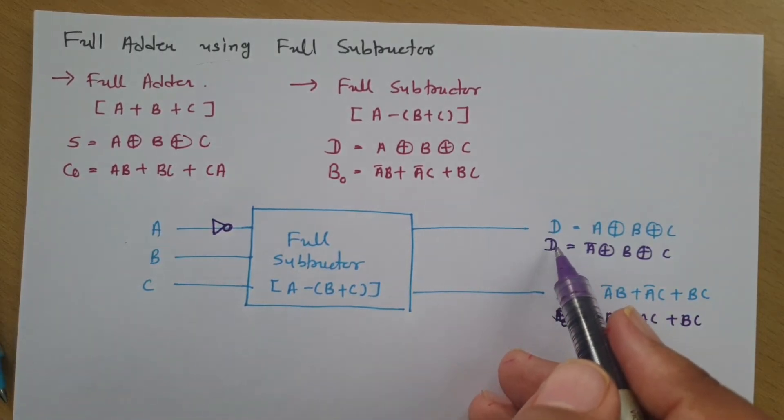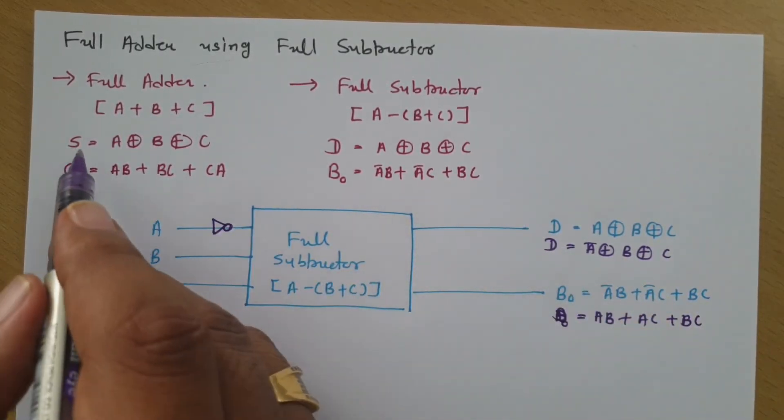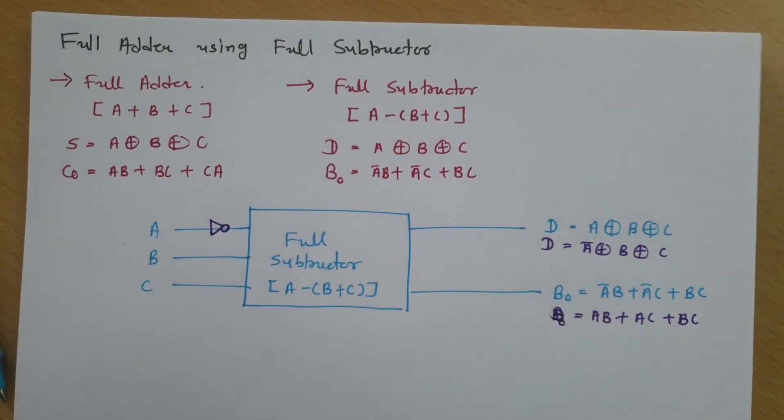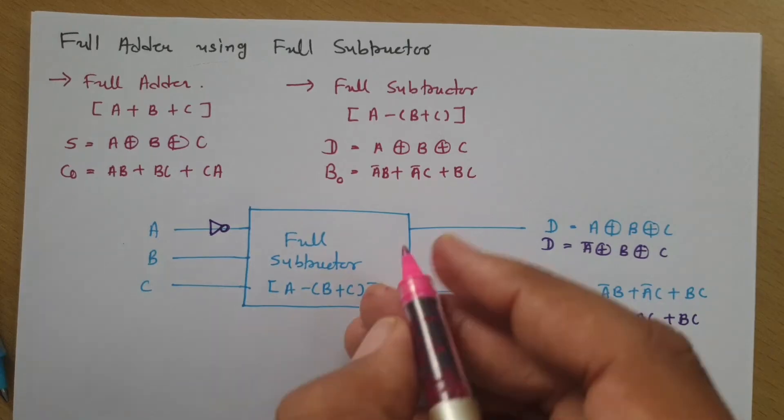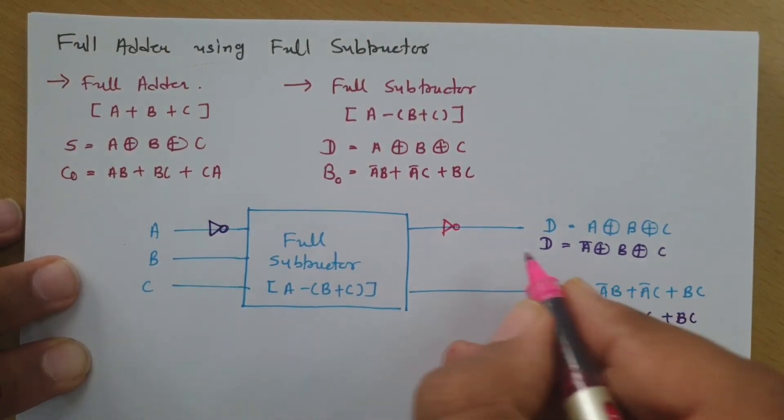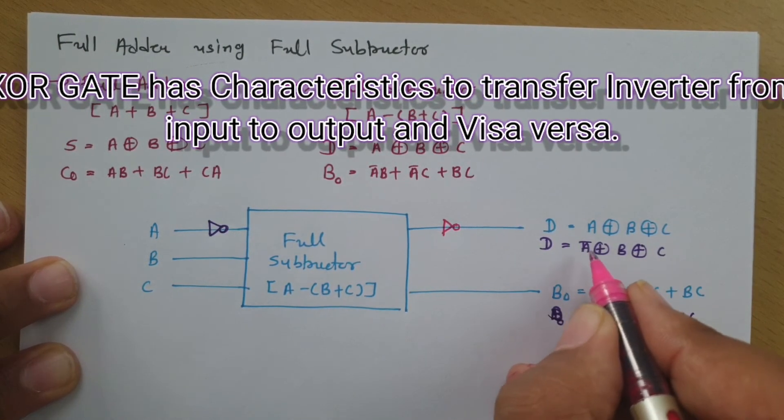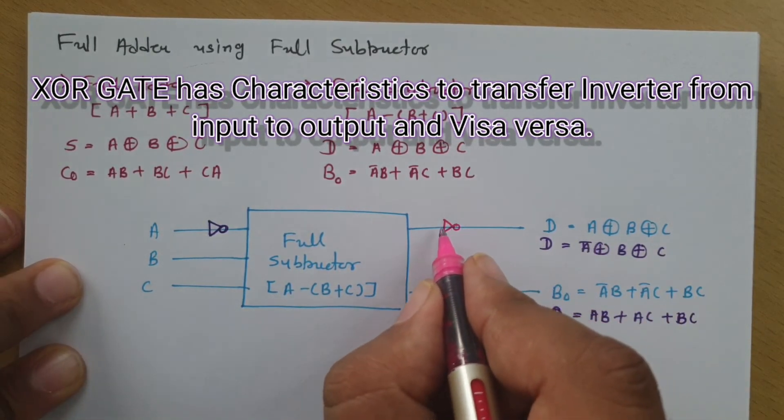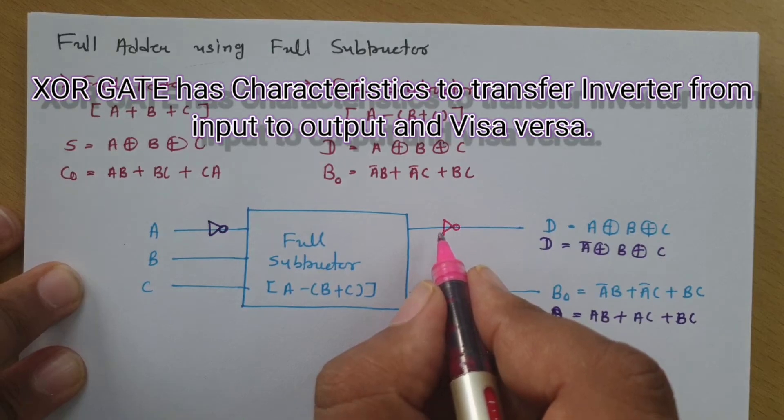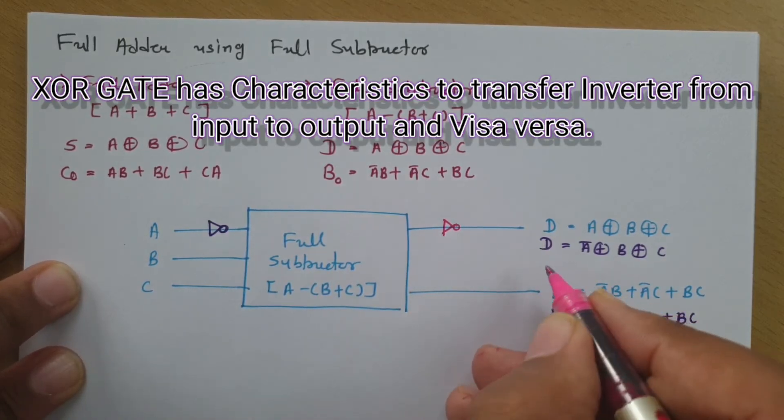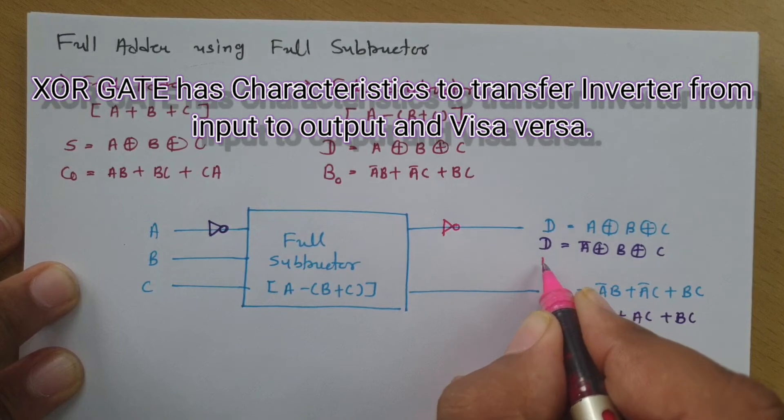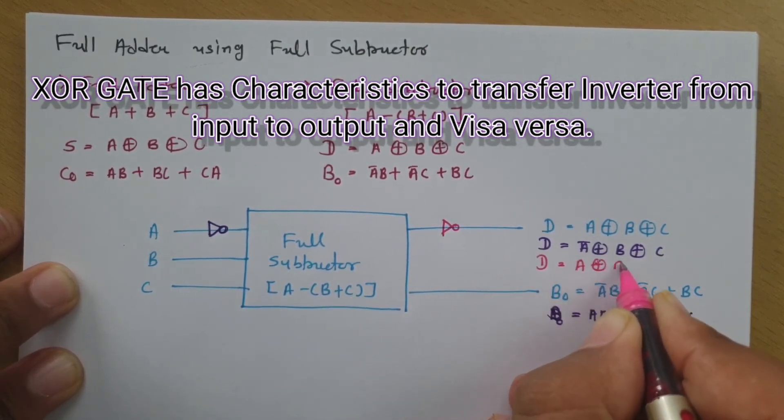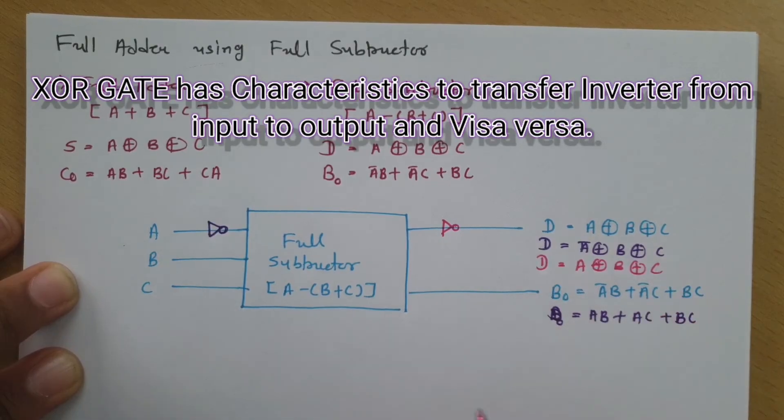But now, to make this difference similar to sum, again, if I connect one more inverter over here. So, in that case, see this A bar A bar will get cancelled. In XOR operation, input inversion is getting translated at output side. So, here, after connecting NOT gate over here, this will be now A XOR B XOR C.